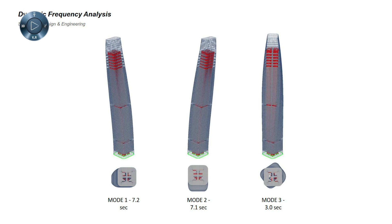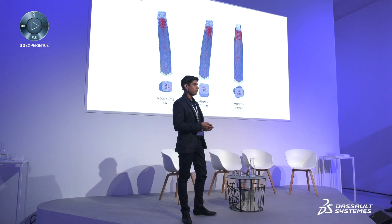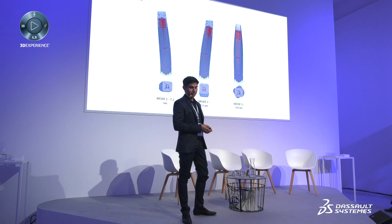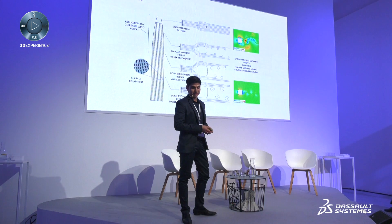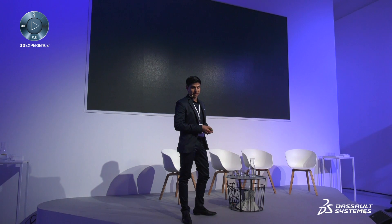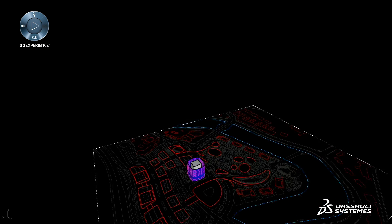This is what that looks like in section. These are some of the analytical processes we use to look at deflections and deviations, and of course CFD. You can't complete a tower without doing CFD, and the form has a big role to play in that.